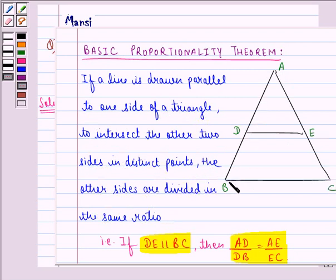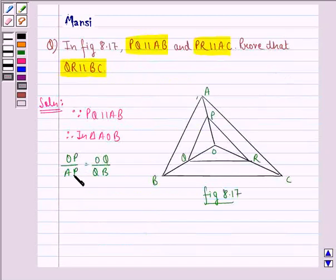So we have applied this theorem here and we get OP by AP is equal to OQ by QB. We name this 1.